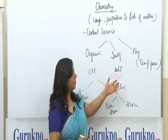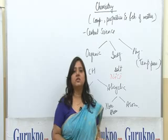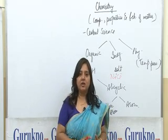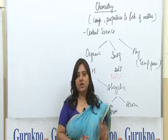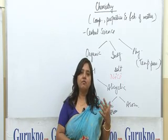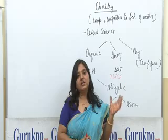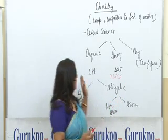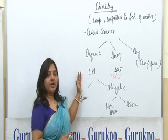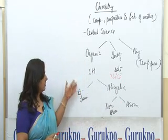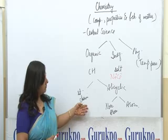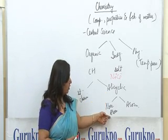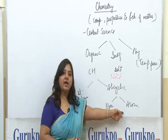Then comes physical chemistry. Physical chemistry deals with temperature and pressure — so we can say thermodynamics and kinetics. When we talk about the working of an AC or a freezer at home, we are talking about physical chemistry and its physical aspects. Organic chemistry is again divided into three branches: one is the straight chain, then alicyclic, and alicyclic is further classified into non-aromatic and aromatic compounds.